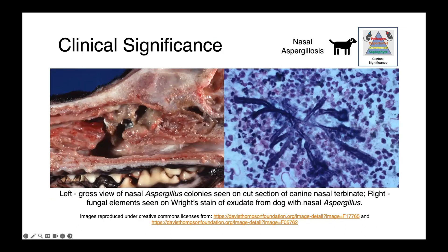In this post-mortem image, you can see the gross view of nasal aspergillosis. On cut section, the fungal mats are seen on the nasal turbinates, perhaps going back towards the cribriform plate and towards the brain. On the right, what you can see is a Wright stain of nasal exudate from a dog with nasal aspergillosis, and these abundant fungal elements are really notable.